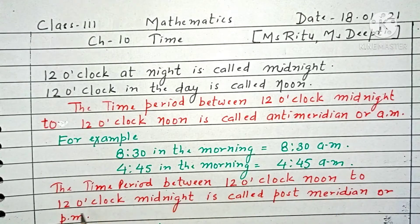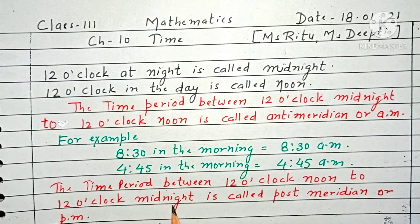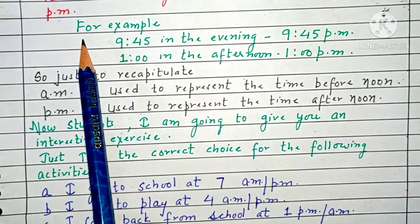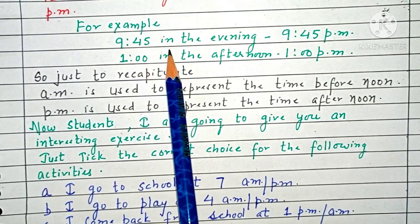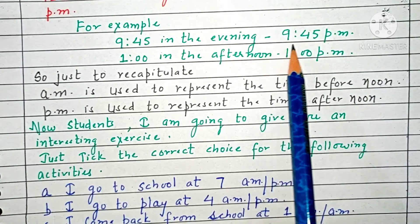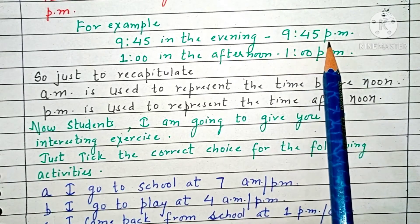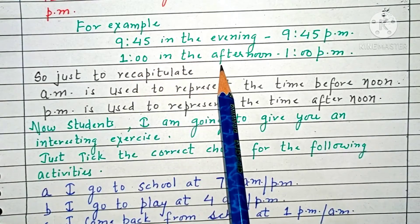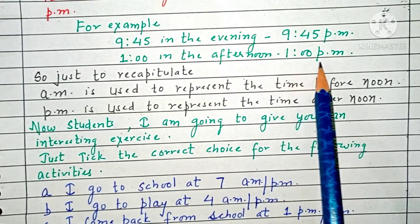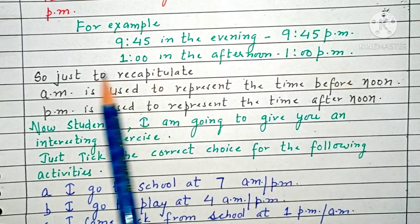The time period between 12 o'clock noon to 12 o'clock midnight is called post-meridian or PM. For example, 9:45 in the evening is 9:45 PM, and 1 in the afternoon is 1 PM.